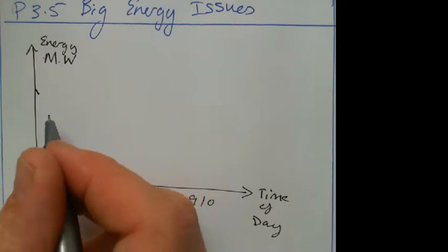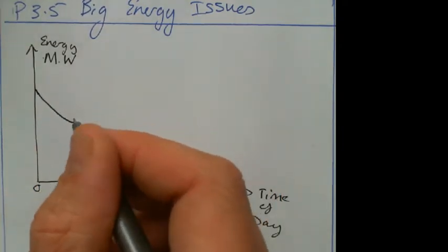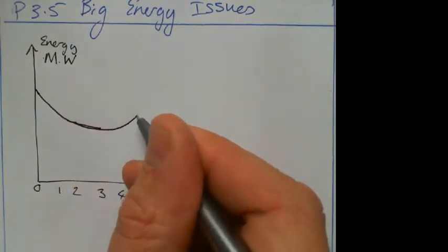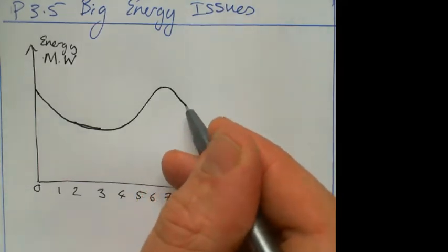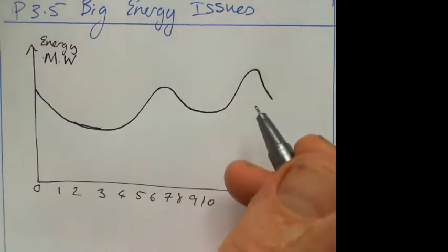So on until you get to 24. You're going to notice that you're not going to have much in the way of demand when it's really early, and then when people start to wake up the demand is going to increase, might drop off again when people have started to work, and then increase again throughout the day.